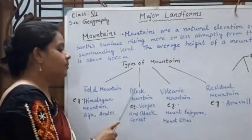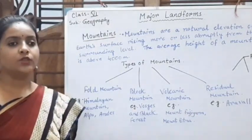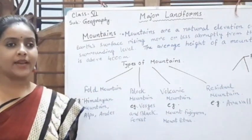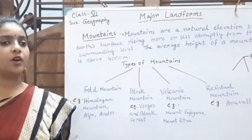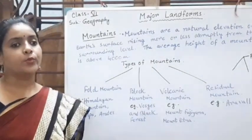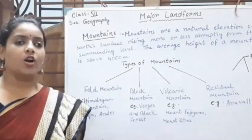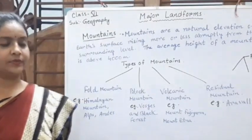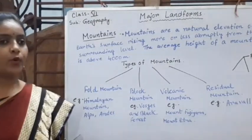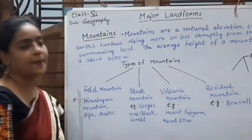Next is block mountain. This kind of mountain is formed due to a crack or fault in the Earth's surface. Due to this crack, a portion of land either goes down or is pushed up. The upward land is called a block mountain — examples are the Vosges and Black Forest. The downward portion is called a rift valley — example is the Rhine Valley.